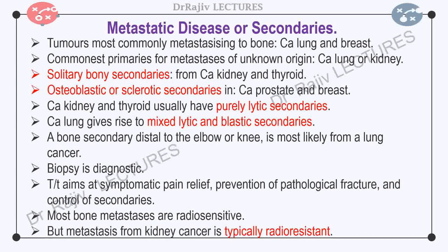Skeletal metastases are typically multifocal, but carcinomas of the kidney and thyroid may present with solitary lesions. Common sites affected are spine, ribs, pelvis, and long bones. Common symptoms are bone pain and pathological fracture. On plain x-ray, 20–25% of metastatic lesions are missed. Hence, in suspected cases, a bone scan should be performed.